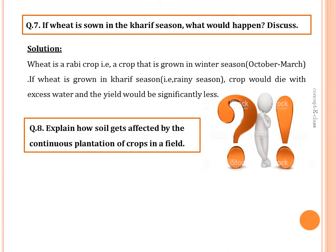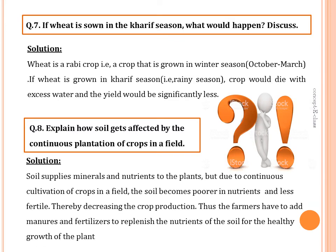Question eight: explain how soil gets affected by continuous plantation of crops. Soil supplies minerals and nutrients to plants, but due to continuous cultivation, the soil becomes poorer in nutrients and less fertile, which decreases crop production. Thus, farmers have to add manure and fertilizers to replenish soil nutrients, or apply crop rotation, or leave the field uncultivated for a few seasons.